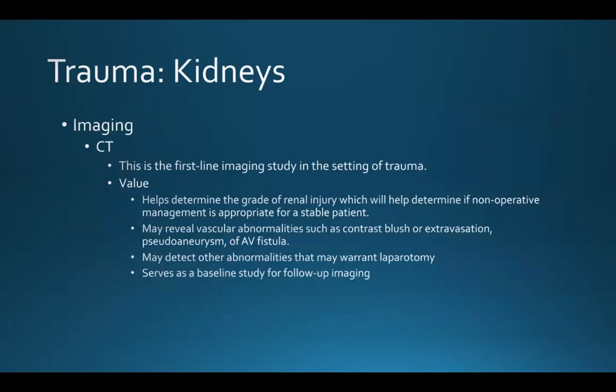CT is usually first-line imaging in the setting of trauma. It helps determine the grade of renal injury, which helps determine if non-operative management is appropriate for a stable patient. It can reveal vascular abnormalities such as a contrast blush or extravasation, a pseudoaneurysm, or an AV fistula. It may detect other abnormalities that may warrant a laparotomy and can serve as a baseline study for follow-up imaging.